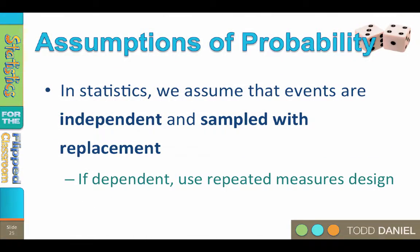In statistics class, we assume that events are independent and sampled with replacement. The assumption of independence is part of sampling. If the events are dependent — such as in a before-and-after study where your after score depends on your before score — then we're using a repeated measures design. We need to know whether the assumption of independence of measurements has been violated. The assumption of replacement is because in the real world, you get returned to the population after you've been sampled. Have you ever taken a poll before? Probably yes. Have you ever taken another survey after that? Yes — aren't you glad the first poll was not done without replacement? You would have been removed from the population. So we assume that events are independent and sampled with replacement.